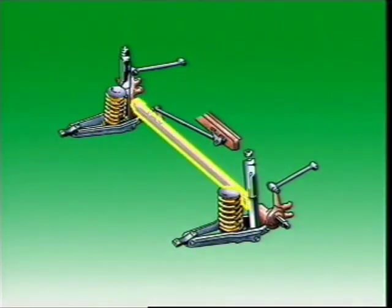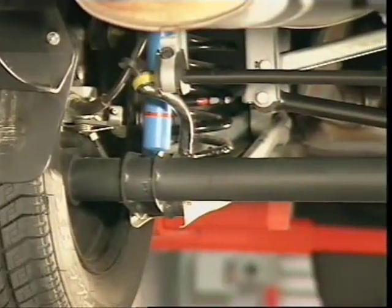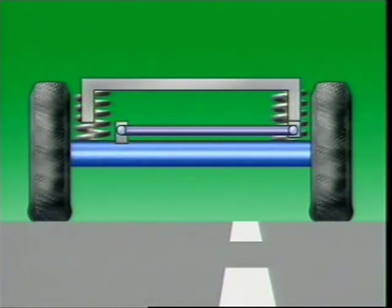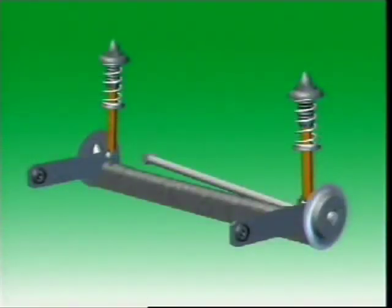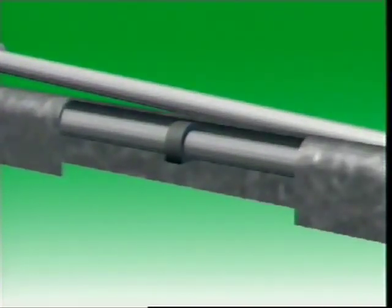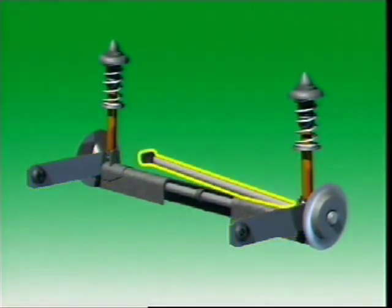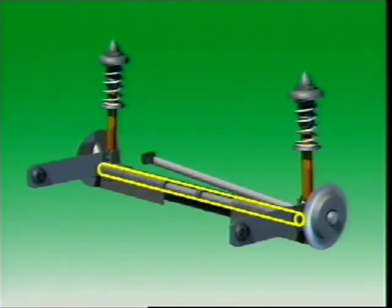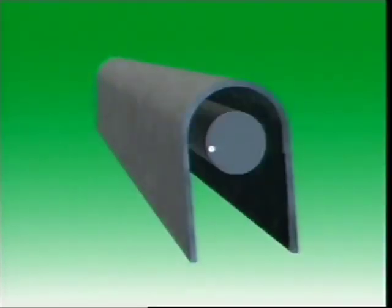On front-wheel drive vehicles, a simple beam axle can be used on the rear with coil spring suspension and control arms for location. This is called a dead axle since it only supports the vehicle and doesn't transmit any drive. It is also non-independent, as deflection of a wheel on one side will be transferred to the other wheel. This can be reduced by using a U-shaped axle beam with a torsion bar mounted inside it. Trailing arms are welded to the beam to locate the axle longitudinally, and a lateral rod prevents lateral movement when cornering.